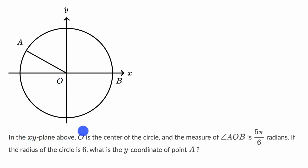In the xy plane above, O is the center of the circle right over here, and the measure of angle AOB is five pi over six radians. If the radius of the circle is six, what is the y-coordinate of point A?